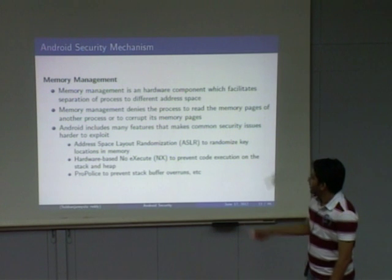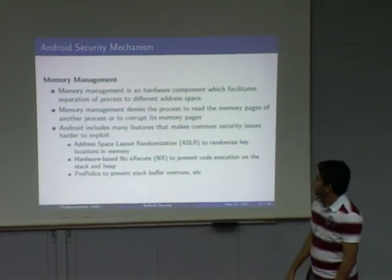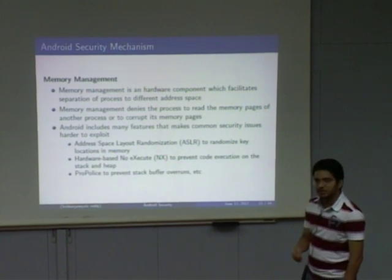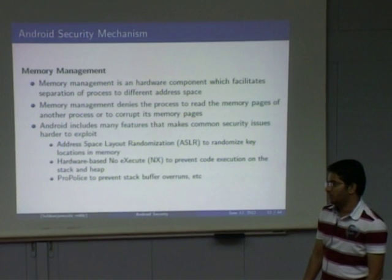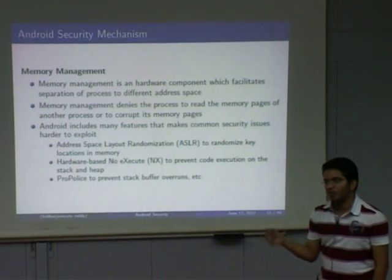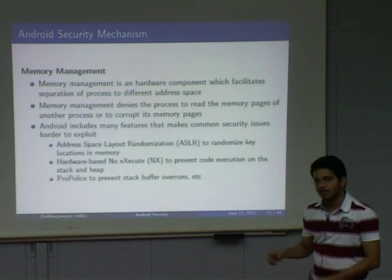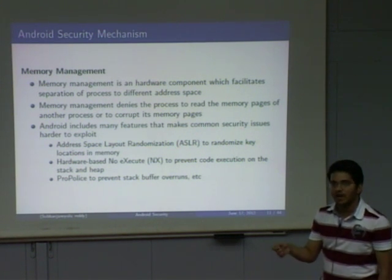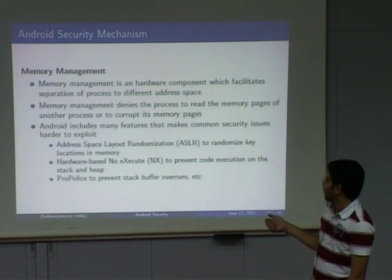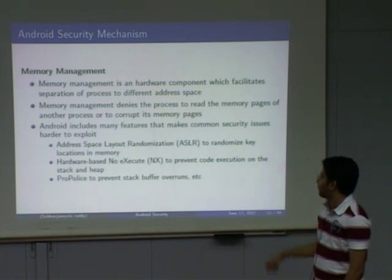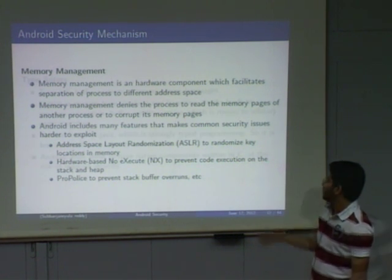To check whether there is a buffer overflow attack, we can use a canary value — we keep a known value at some address space of the stack. As soon as the application is executed, we check whether that value has changed. If it has changed, we can conclude it is a buffer overflow. Additionally, the address space is allocated randomly (ASLR).